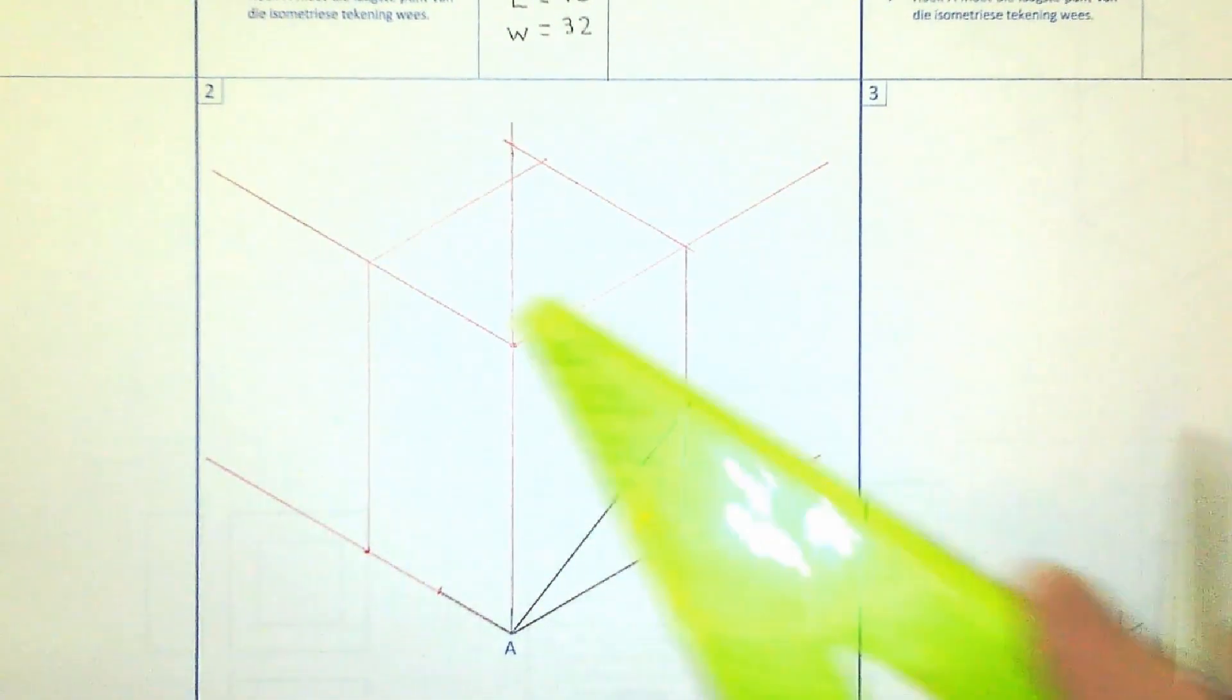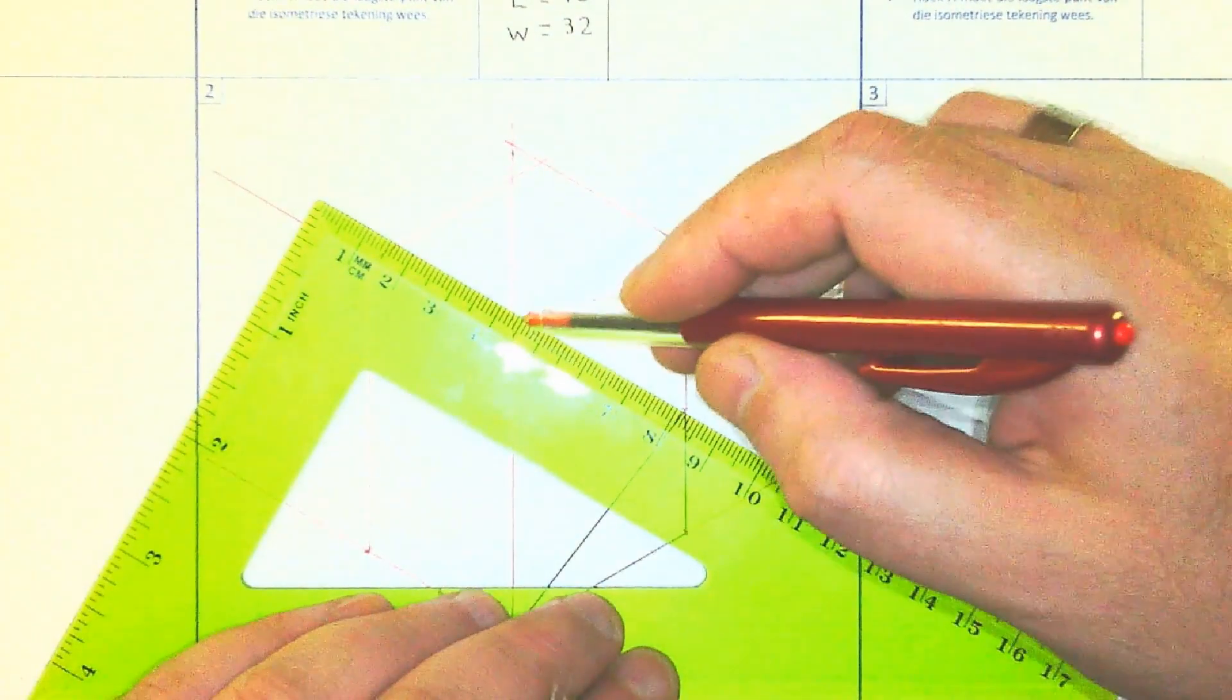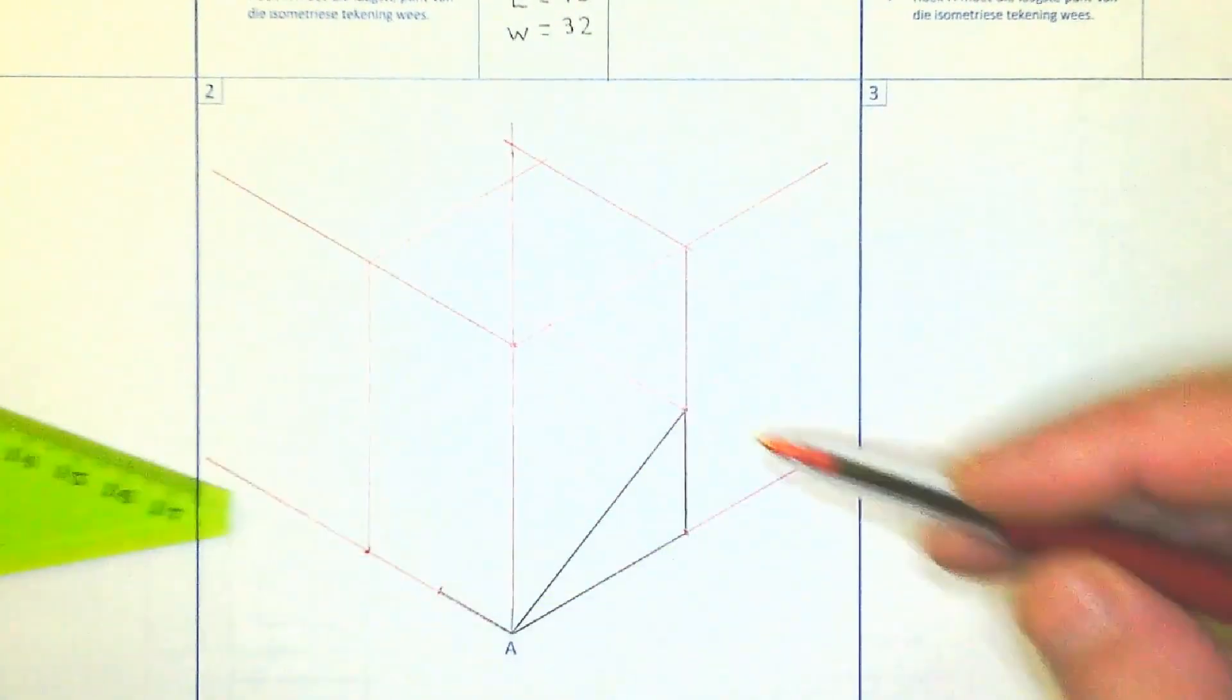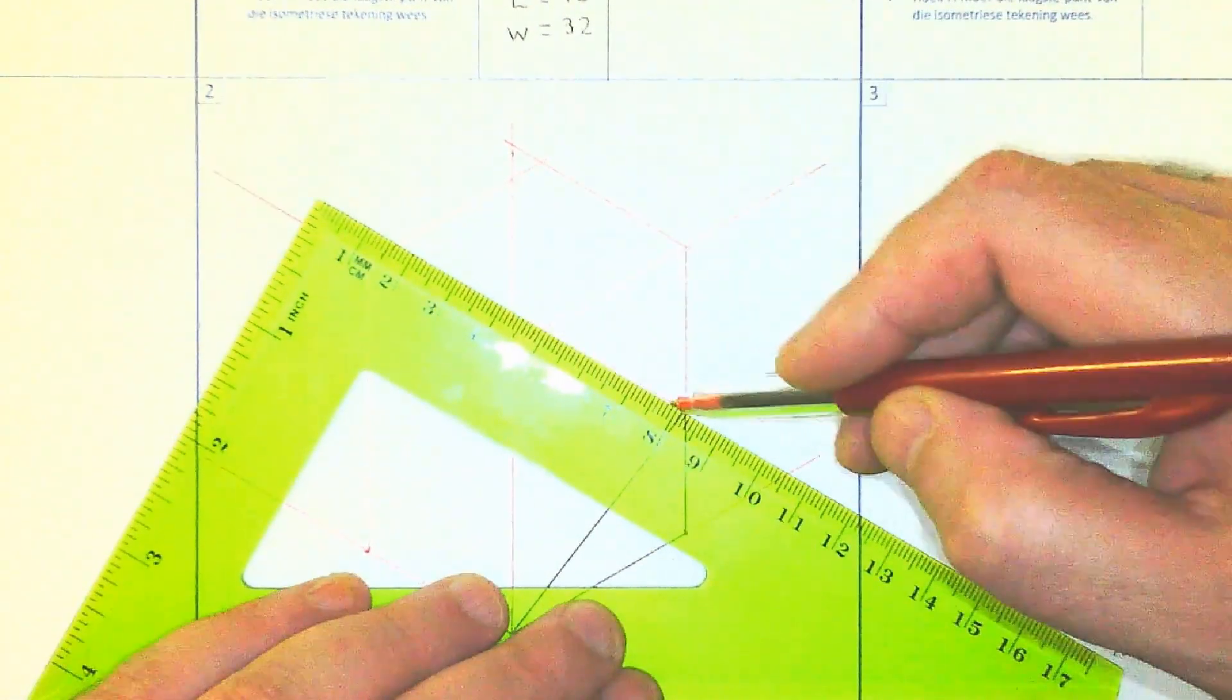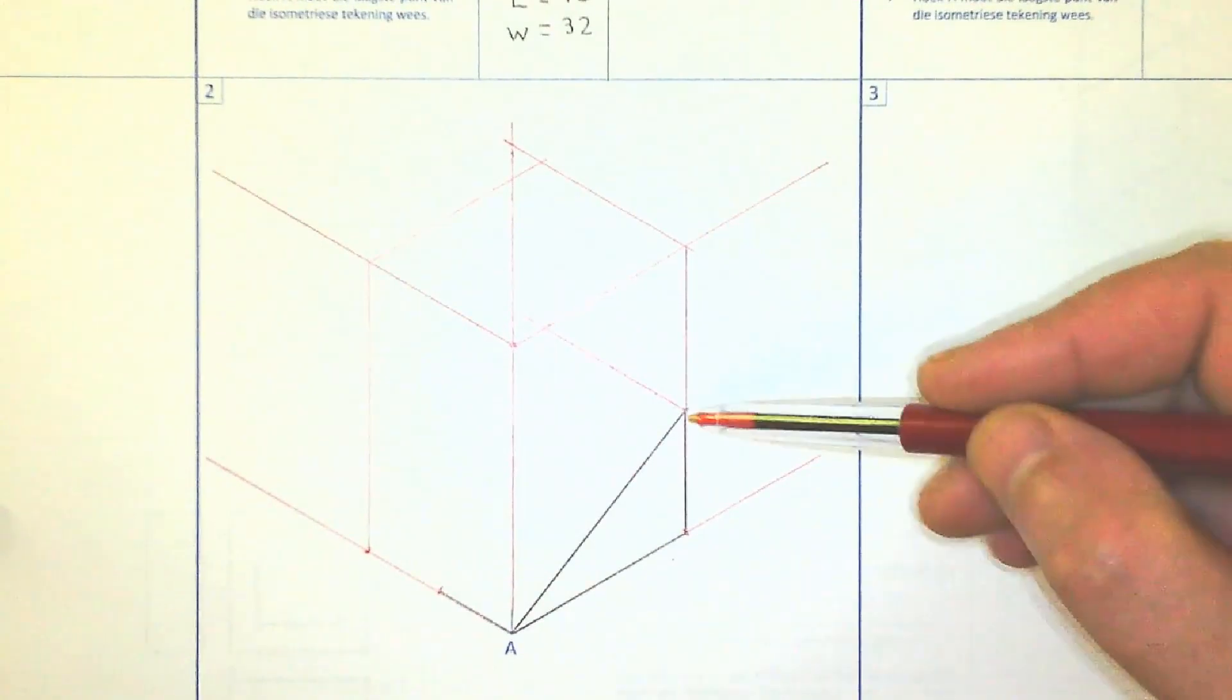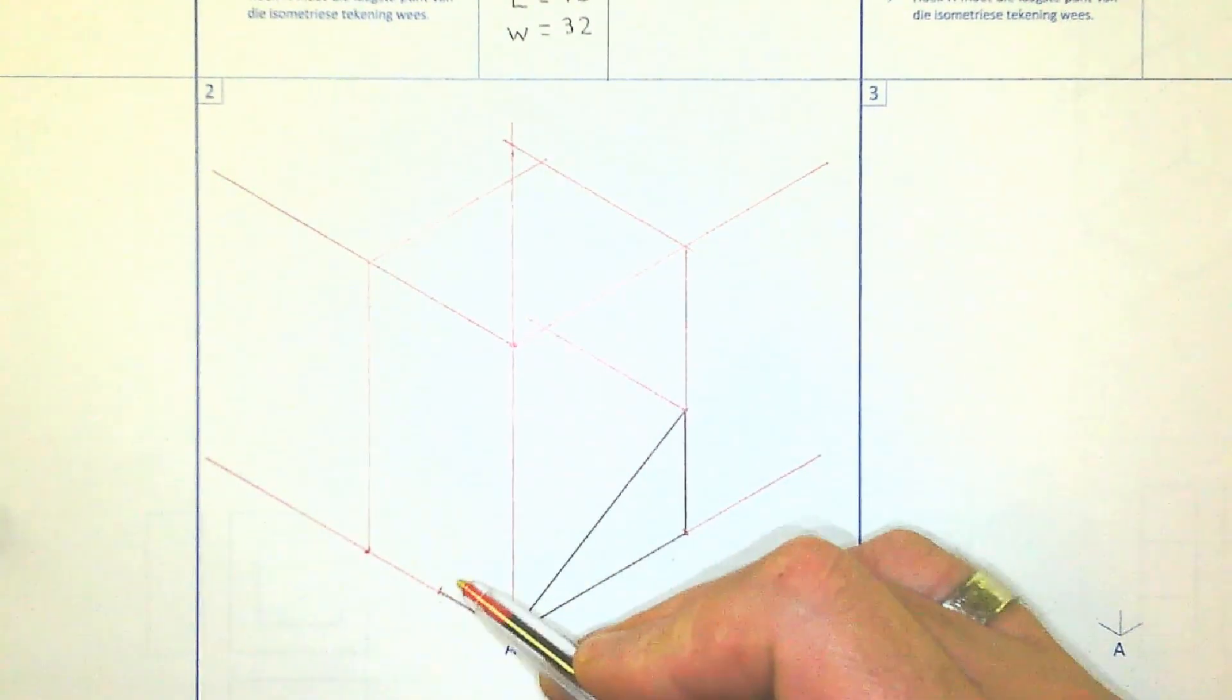Now to get the back, that's obviously going at 30 degrees as well because it is an isometric line. So we go from the back corner and we draw a construction line running there. So there you can see the construction line running from that point, also at 30 degrees.